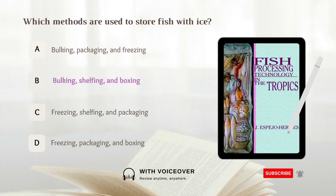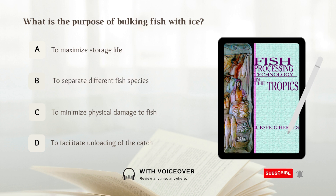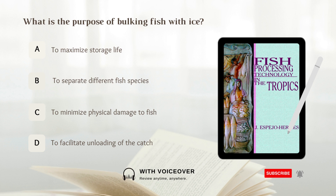What is the purpose of bulking fish with ice? A. To maximize storage life. B. To separate different fish species. D. To minimize physical damage to fish.